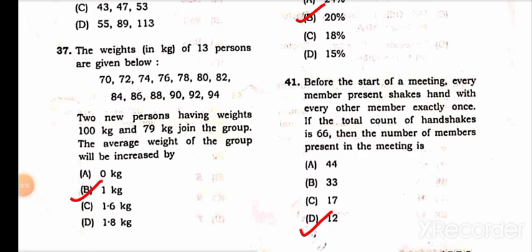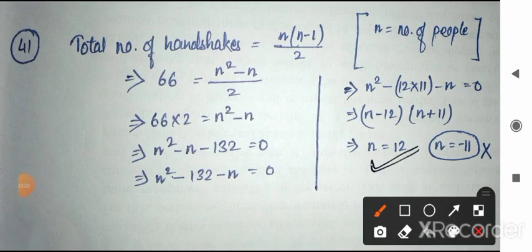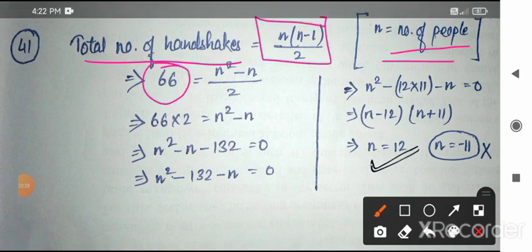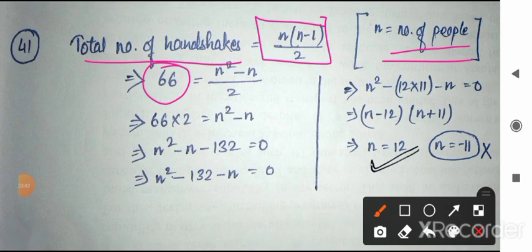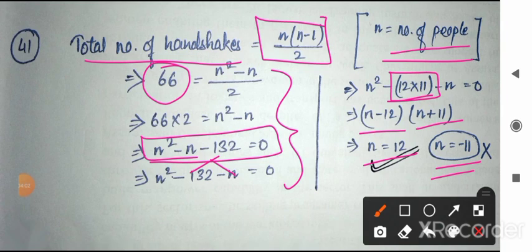Question 41 is the handshake formula question. Before a meeting, every member shakes hands with every other member exactly once. If the total count of handshakes is 66, find the number of members. The formula is n(n−1)/2 = 66. Solving: n(n−1) = 132 = 12×11, so n = 12. The answer is 12.